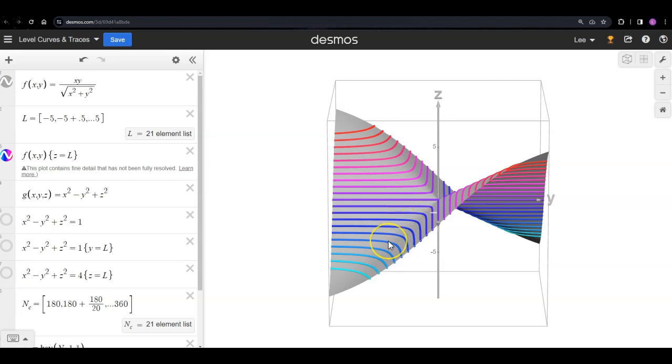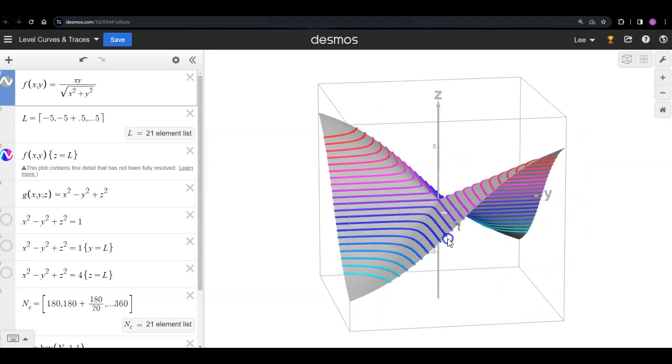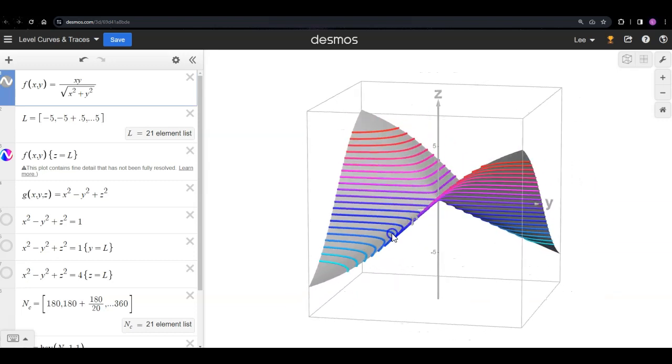It's not quite as smooth as what we think of as a normal saddle surface, but it still has sort of that change in direction where I'm going up in two different directions, going down in two other directions as I travel around.